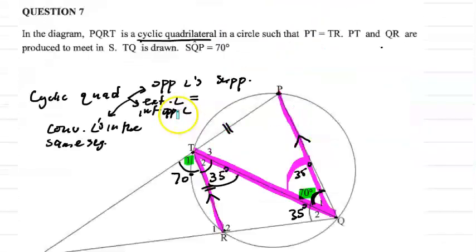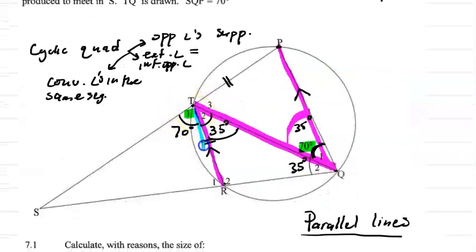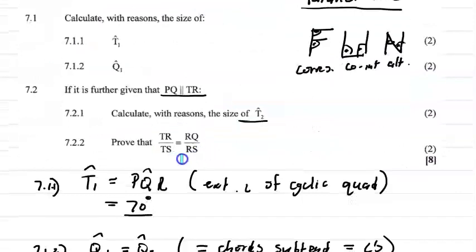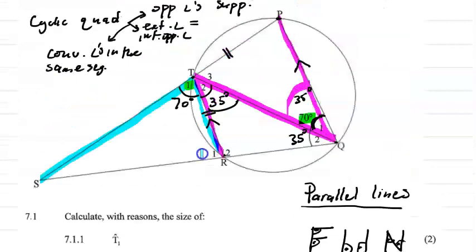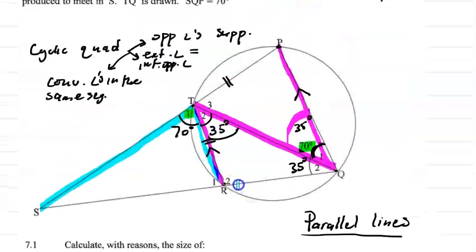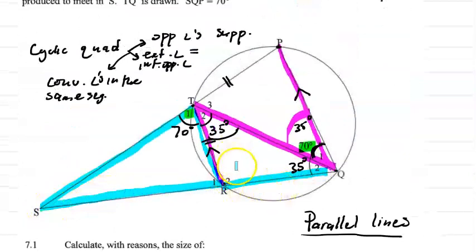So TR is there and TS is here. We have RQ over RS in the diagram. We are also given that TR equals TP.